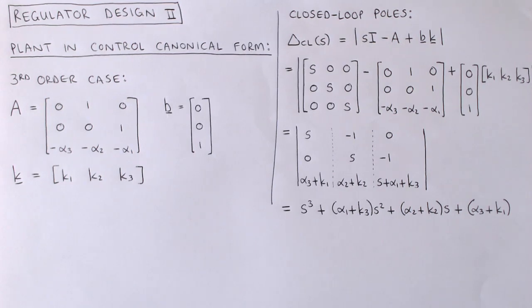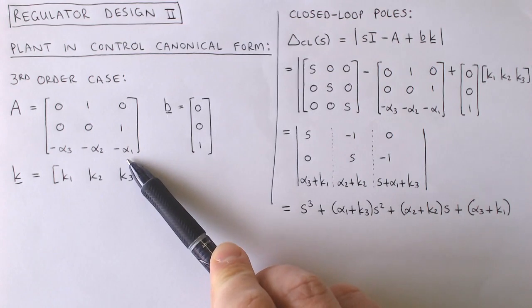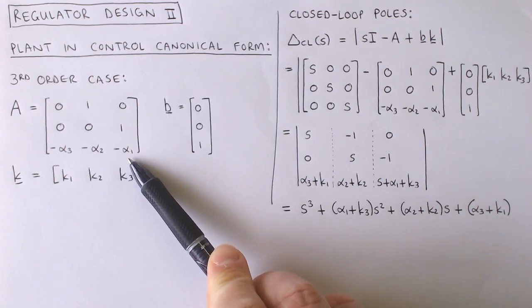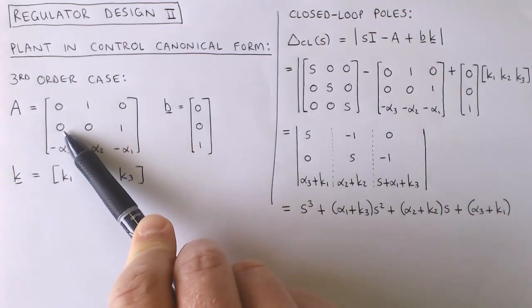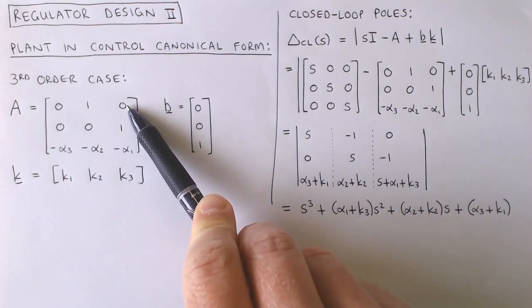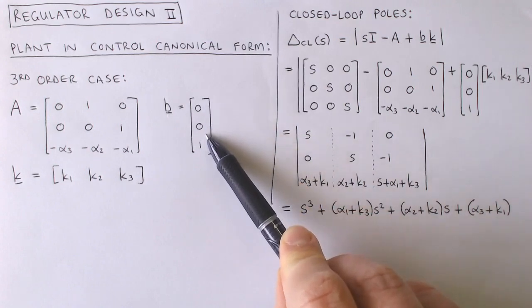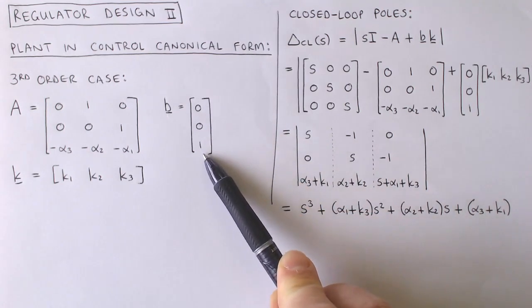Suppose a third order system is described in the control canonical form, which means that the system matrix A has minus alphas on the bottom row, where the alphas are the coefficients of the denominator of the system's transfer function. The rest of the left column contains zeros, and the top right block is an identity matrix. The B vector contains zeros, except for the last element, which is one.